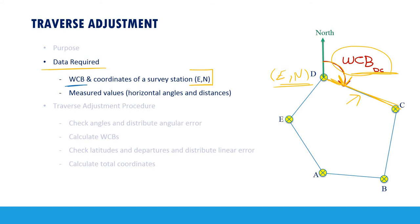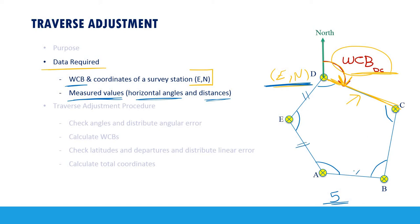Let's say you know the whole circle bearing of side DC and the coordinates of point D. You then need to take your total station and measure the internal horizontal angles of the traverse — all five of them — plus the five distances between each pair of stations. So for a five-sided traverse, you measure five angles and five distances.